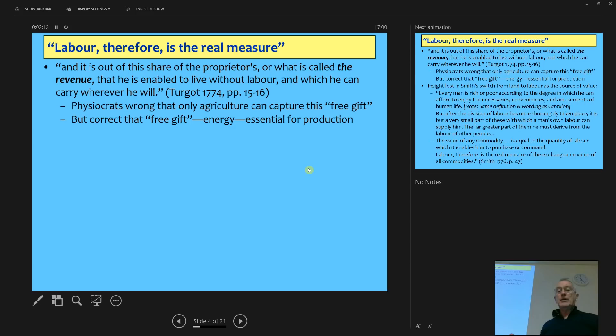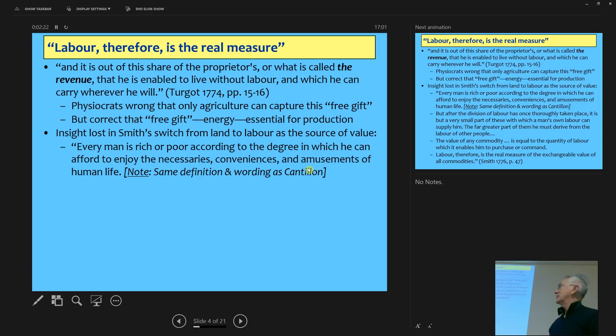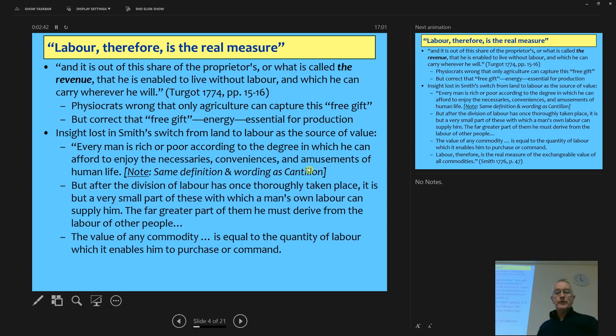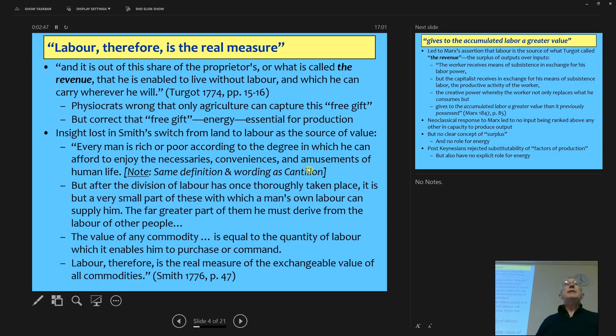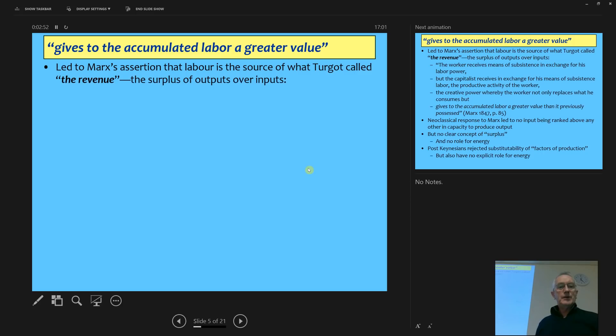And very much productive energy plays an essential role and they need a class distribution of income on top of that. I think that was marvelous. They were wrong about saying agriculture is the only one that can capture that free gift of nature, but they were right to say the free gift is essential for production. So given what they knew, they're the only school of economics, I think, that has thus far properly incorporated energy. And when we come along with Smith, Smith, of course, spent some time with the physiocrats, but he really switched away from seeing land as a source of energy to labour.